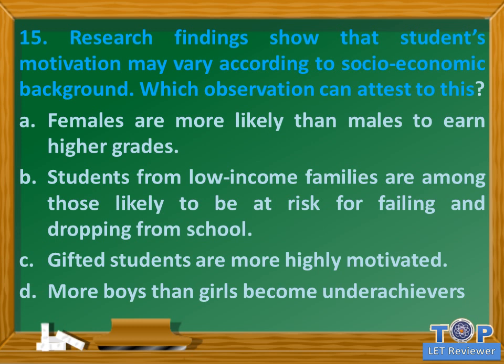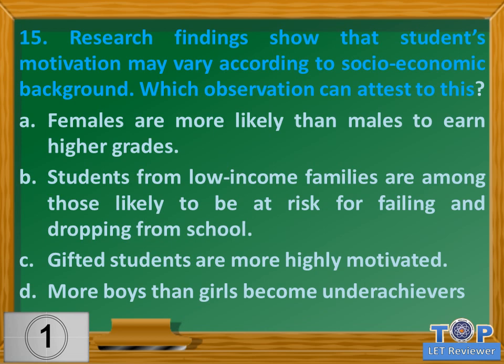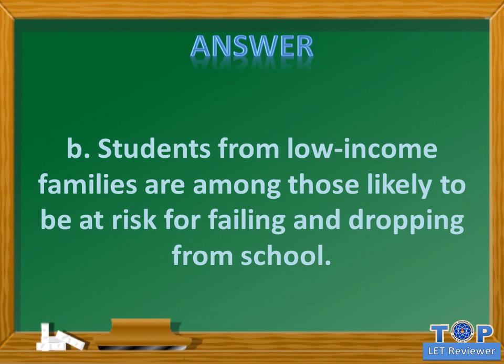Question number fifteen: research findings show that students' motivation may vary according to socio-economic background. A) grades, B) students from low-income families are among those likely to be at risk for failing and dropping from school, C) gifted students are more highly motivated, D) more boys than girls become underachievers. Answer: B) students from low-income families are among those likely to be at risk for failing and dropping from school.